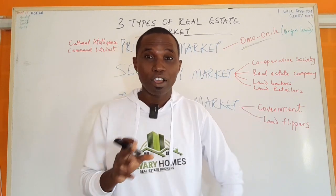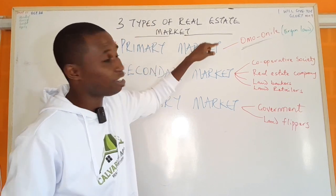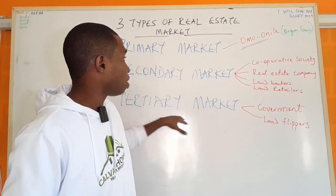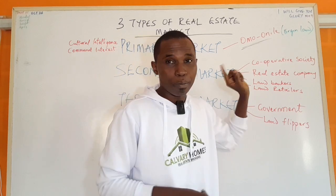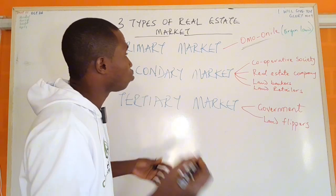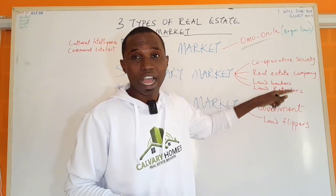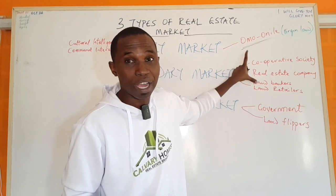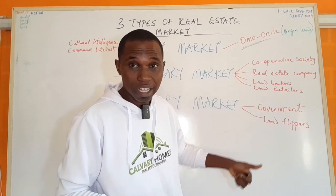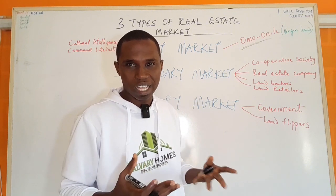So I think with this I've been able to enlighten us on the three types of markets: are you buying from the primary market — directly from the source — the secondary market, or the tertiary market? When you are buying from the secondary markets, the basic thing you need to know is how genuine, how authentic, and how credible are the people you are buying from — the real estate company, the cooperative society, the land bankers, the land retailers.